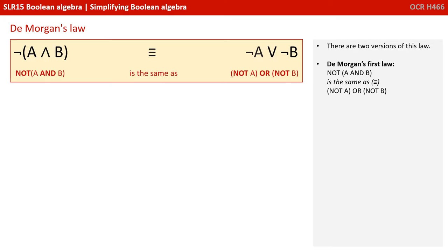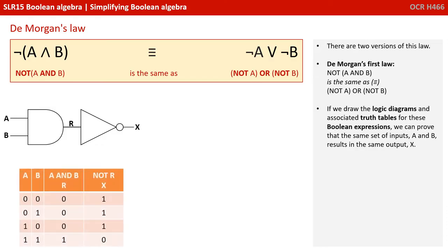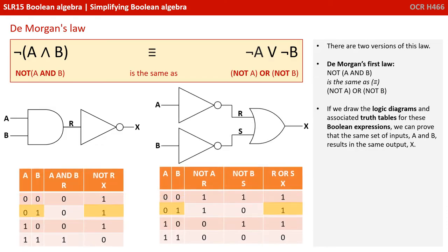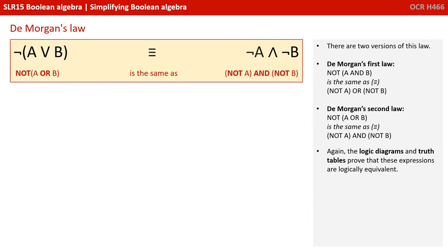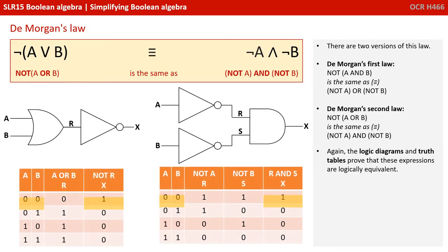There are two versions of this law. De Morgan's first law states that NOT(A AND B) is the same as NOT A OR NOT B. If we draw the logic diagrams and associated truth tables for these Boolean expressions, we can prove that the same set of inputs A and B result in the same output, so these two expressions are equivalent. De Morgan's second law says NOT(A OR B) is the same as NOT A AND NOT B. Again, the logic diagrams and truth tables prove that these expressions are logically equivalent.